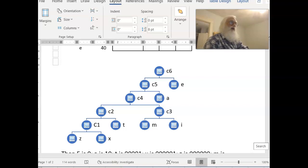On the other hand, if you want to get to A, you have to go left from C6, that's zero, and right from C5, so that's zero, one.